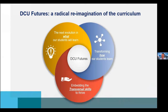DCU Futures is an initiative involving the introduction of ten new undergraduate programs into DCU — nine starting this coming September. These programs represent a fundamentally different way of delivering undergraduate education. It's built around what students will learn, how they will learn, and the third component — my area — transversal skills. Transversal skills are skills that do not reside in any particular discipline or domain but can be applied across all domains, related to 21st century and transferable skills.